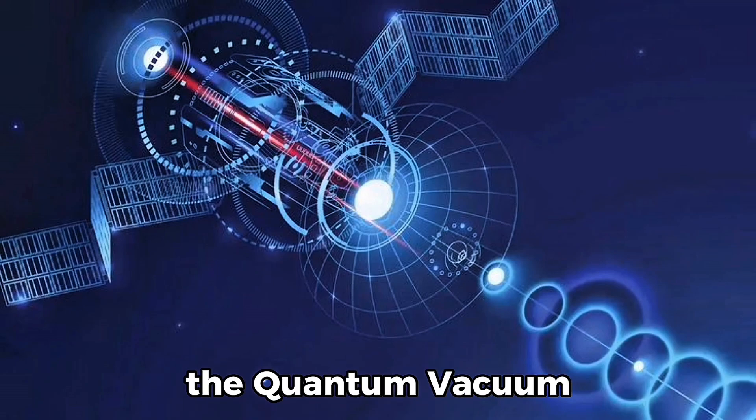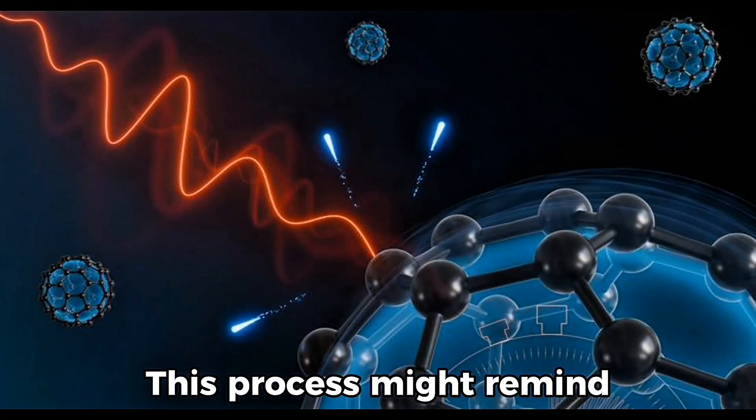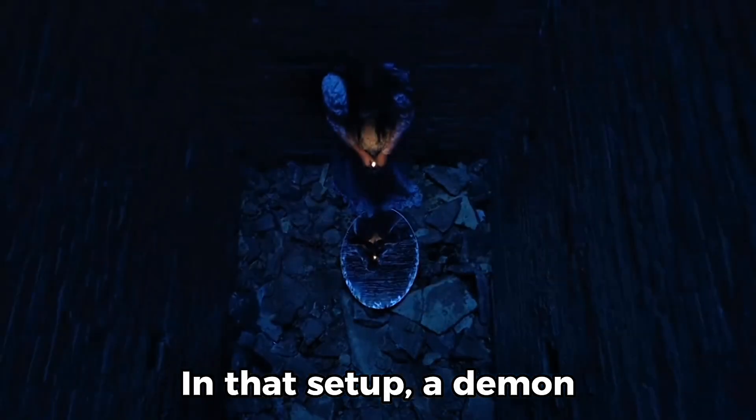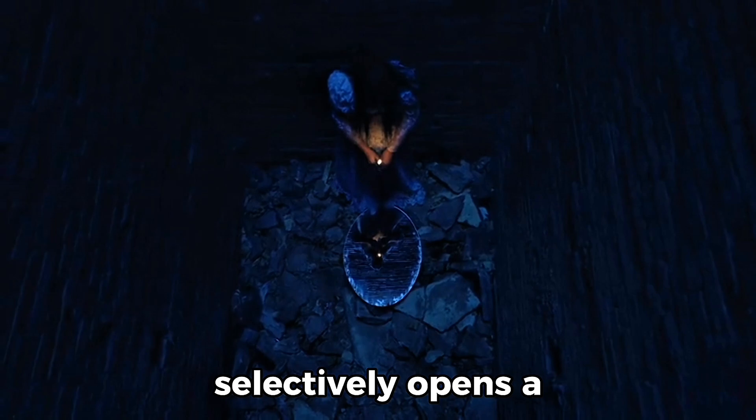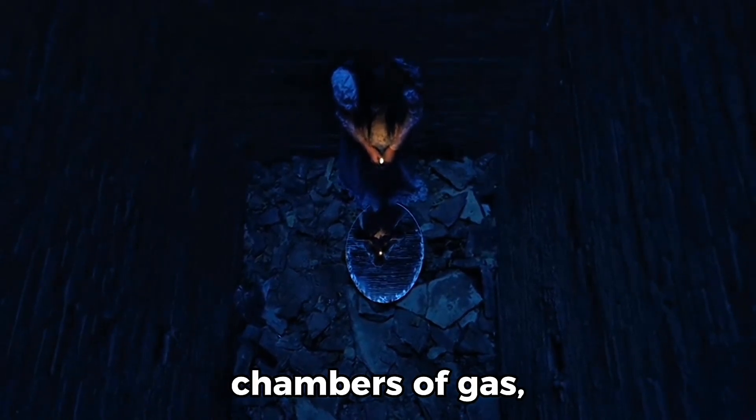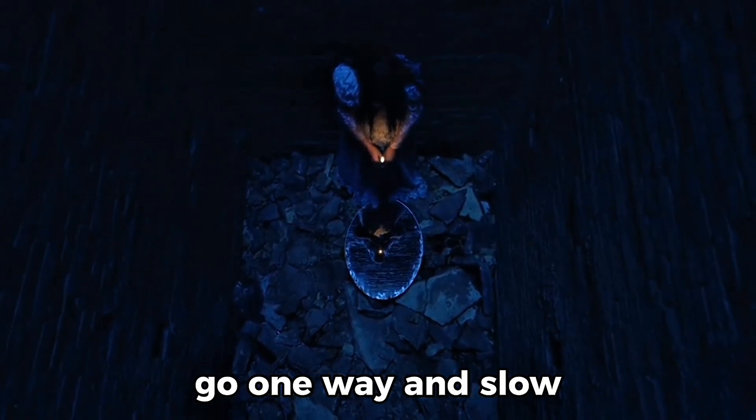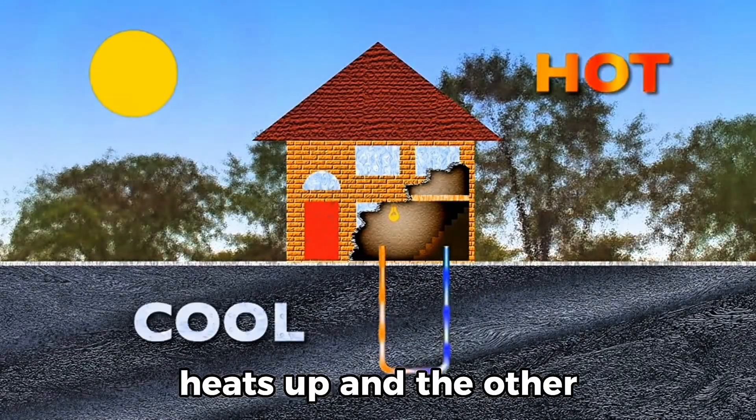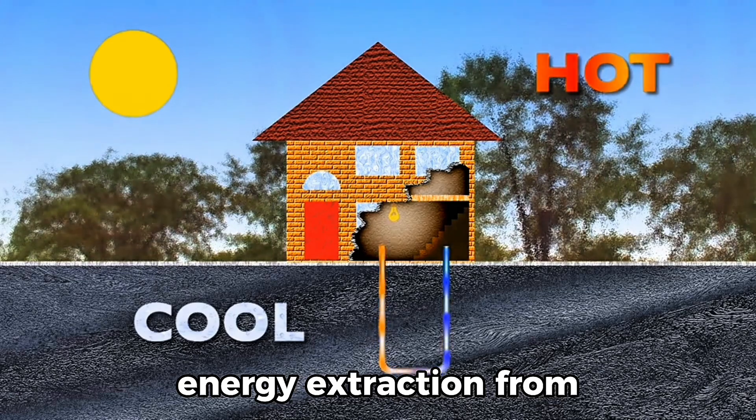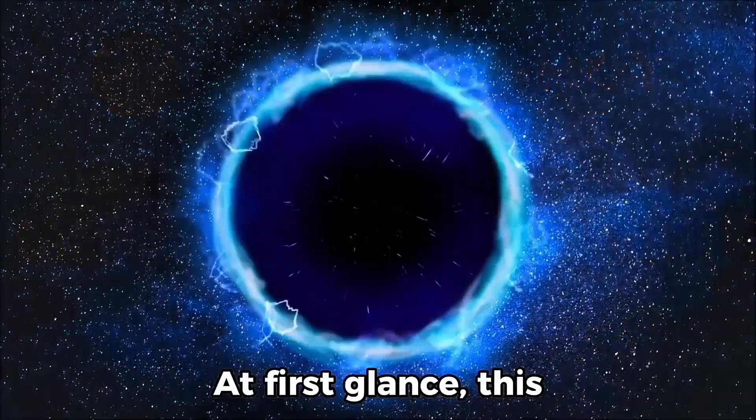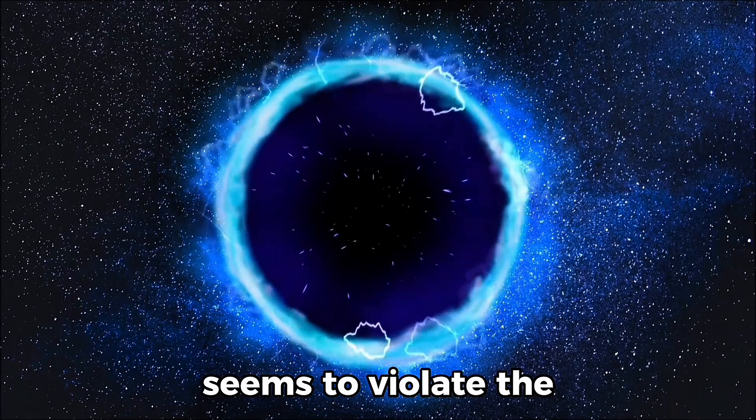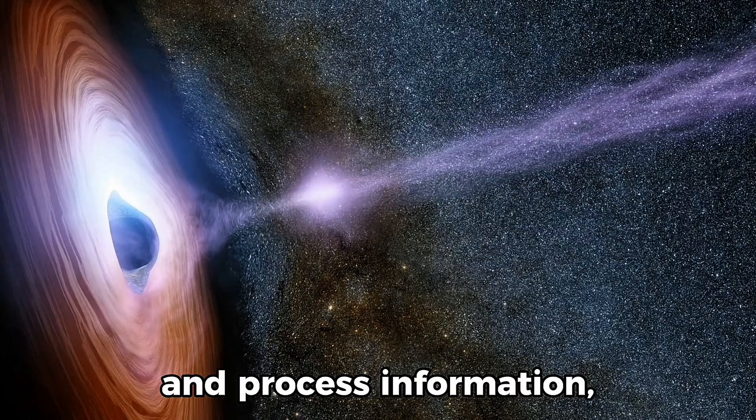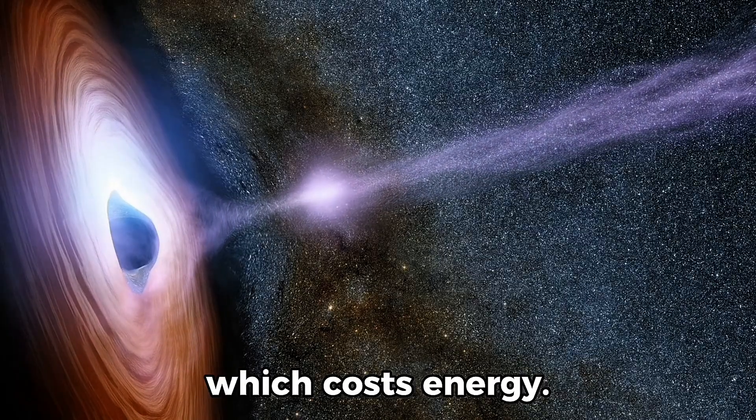A Maxwell's demon for the quantum vacuum. This process might remind you of Maxwell's demon, a thought experiment from classical thermodynamics. In that setup, a demon selectively opens a door between two chambers of gas, letting fast particles go one way and slow ones go the other. Over time, one side heats up and the other cools down, allowing energy extraction from a uniform system. At first glance, this seems to violate the second law of thermodynamics.